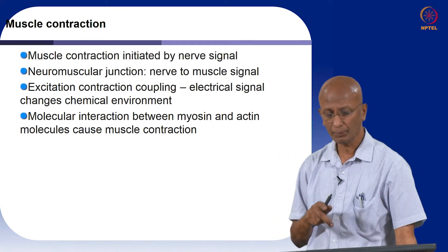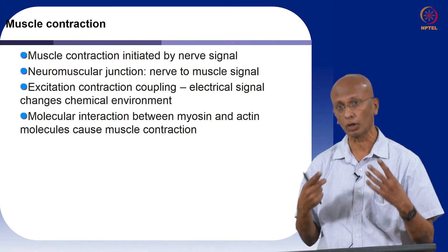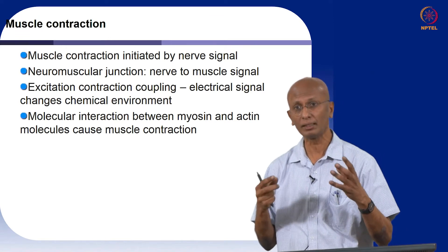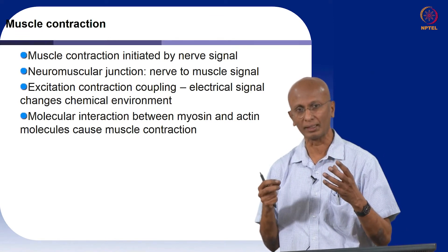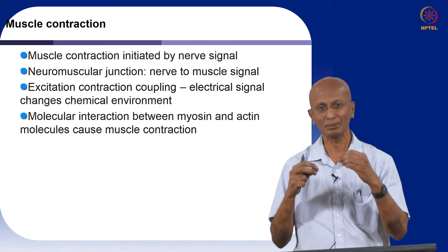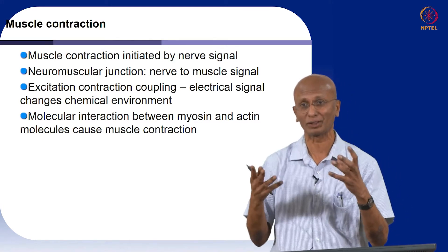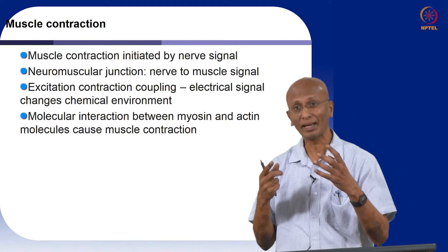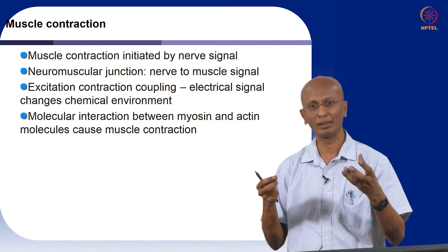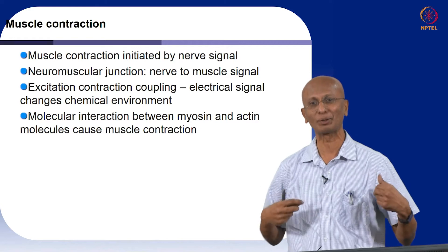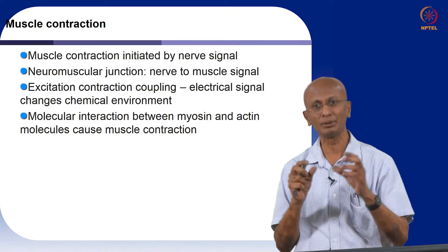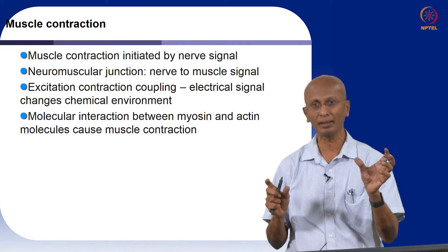The interaction between myosin and actin molecules is what causes muscle contraction. When people initially examined muscles molecularly, they found what appeared to be a large molecule and simply called it actomyosin. Later they found this large molecule was present only when calcium was present — they had essentially forgotten to remove calcium from the solution where they were examining these molecules. If you do not have calcium, these molecules seem to be separate and you call them actin and myosin molecules.